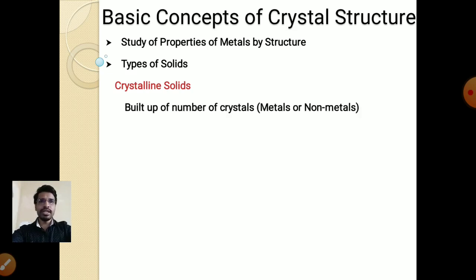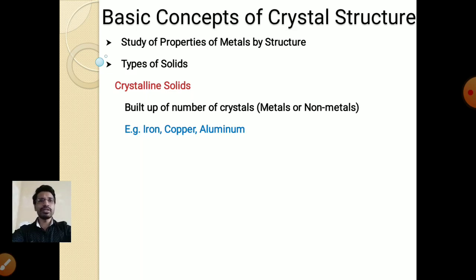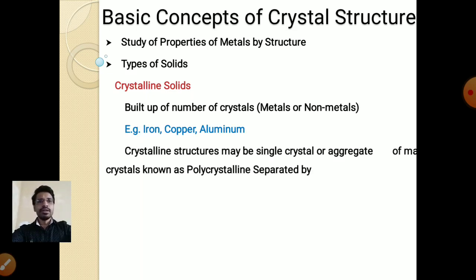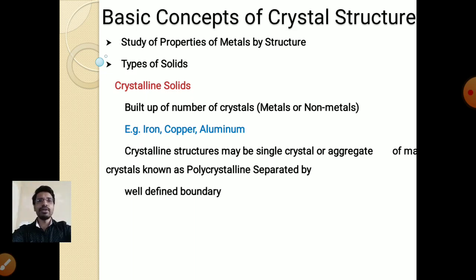A crystalline solid is built up of a number of crystals — metals or non-metals. When many crystals come together, a crystalline solid is formed. Examples are iron, copper, and aluminum. Crystalline structures may be single crystal or an aggregate of many crystals, known as polycrystalline, and those crystals are separated by a well-defined boundary.